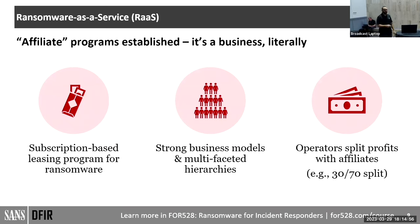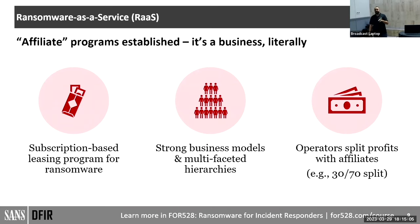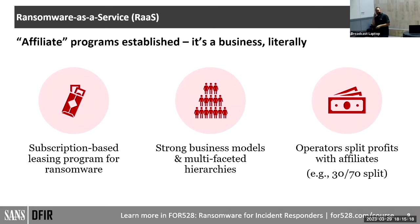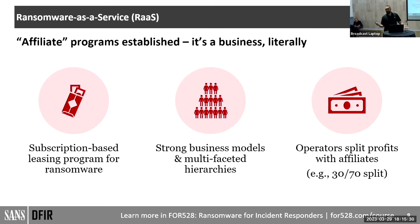The split is often something like 30/70 — the affiliate actually gets the lion's share, around 70%. It makes sense because it's enticing: you can go work for Lockbit and get 70% of each ransom. Meanwhile, groups like Lockbit — one of the largest groups out there — just take 30%, but they've got hundreds of affiliates, so they just keep raking in money.